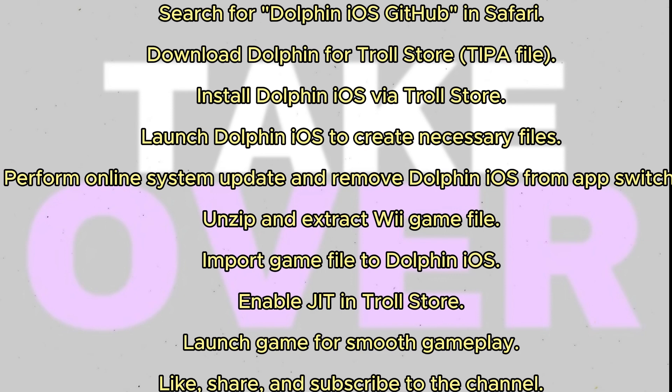Now let's load Wii games to Dolphin iOS for gameplay. Launch the Files app and navigate to the location of the downloaded game compressed file. Unzip and extract the file to reveal the main game file. Launch Dolphin iOS, tap the plus icon, and navigate to the extracted folder. Select the game file and either copy or move it.